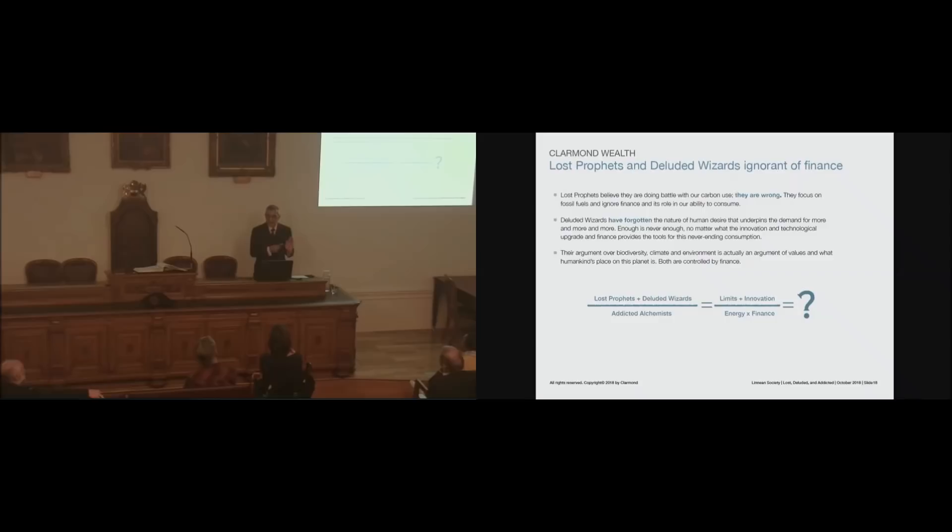No one has paid the upfront price of that phone. So that phone is credit. It's like the old washing machine or the car or the TV. So it's the credit that's driving it. It's the credit that is, again, in the denominator. And this argument over biodiversity and climate between lost profits and wizards is an argument of values, not of the planet. And both are controlled by finance. So if you look at a very simple formula here, lost profits are limits, diluted wizards are selling us innovation, the addicted alchemists are selling us an energy and financial system.